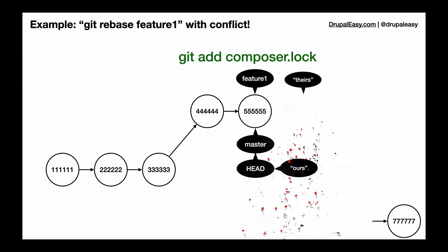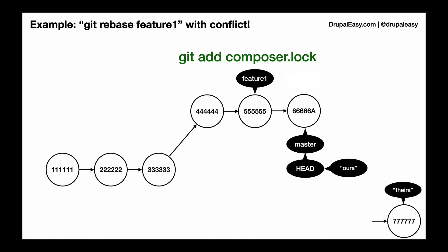Once it's done, you can go ahead and add your composer.lock file, and your 666 commit is going to be slightly different. That's why I changed it to a 66666a commit. It's not exactly the same because it's got a slightly different composer.lock, but for the most part it's the same.